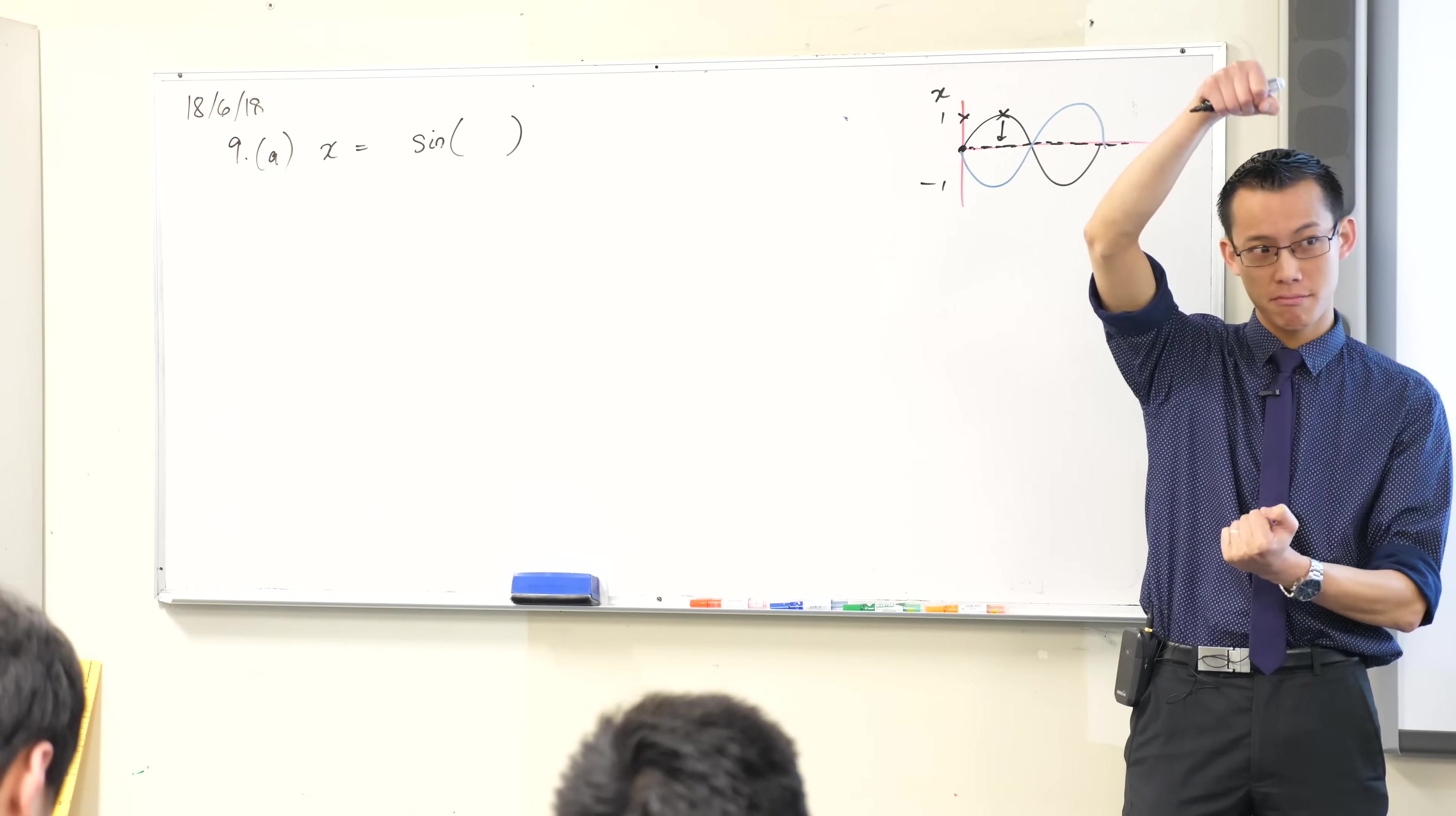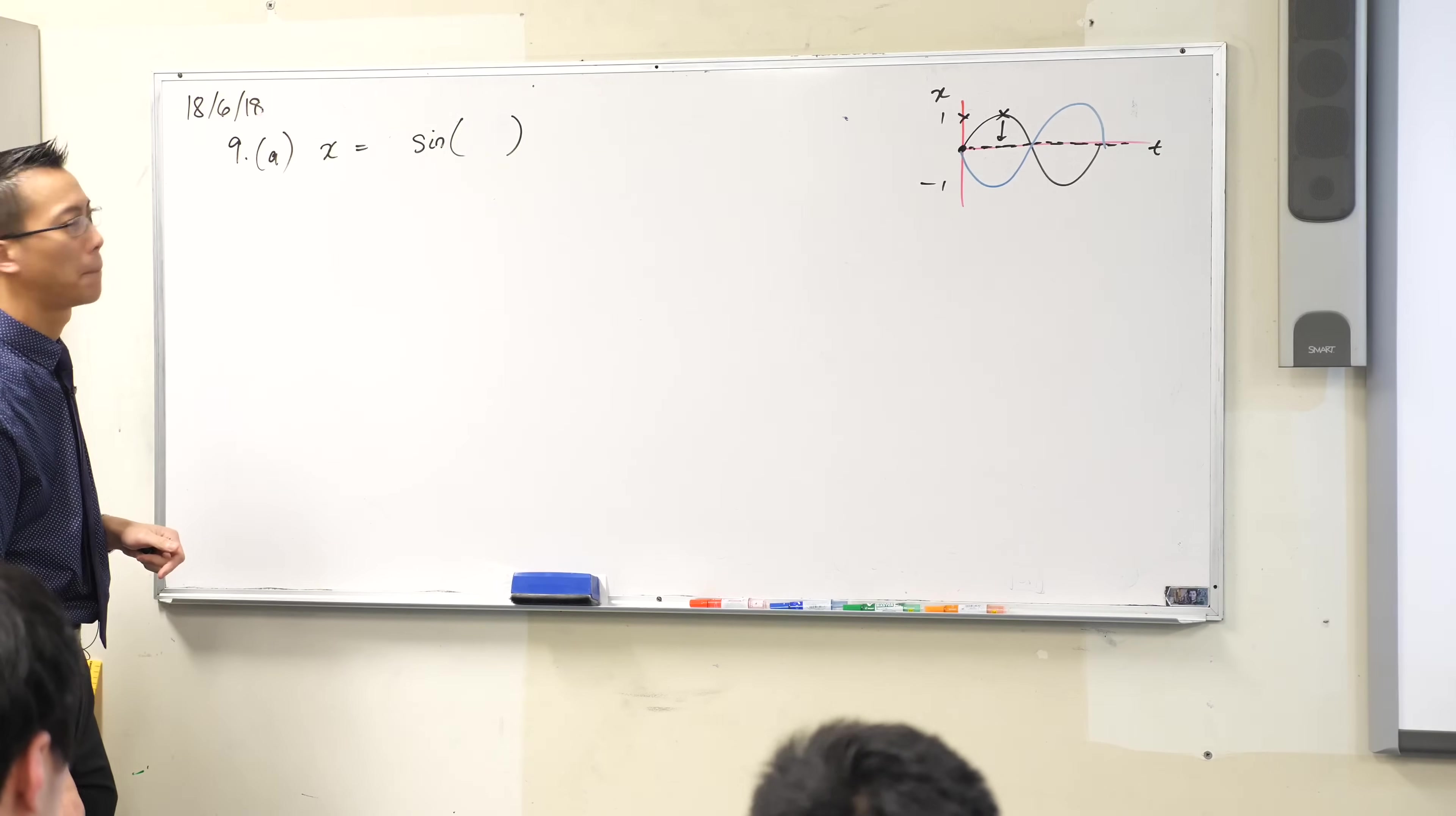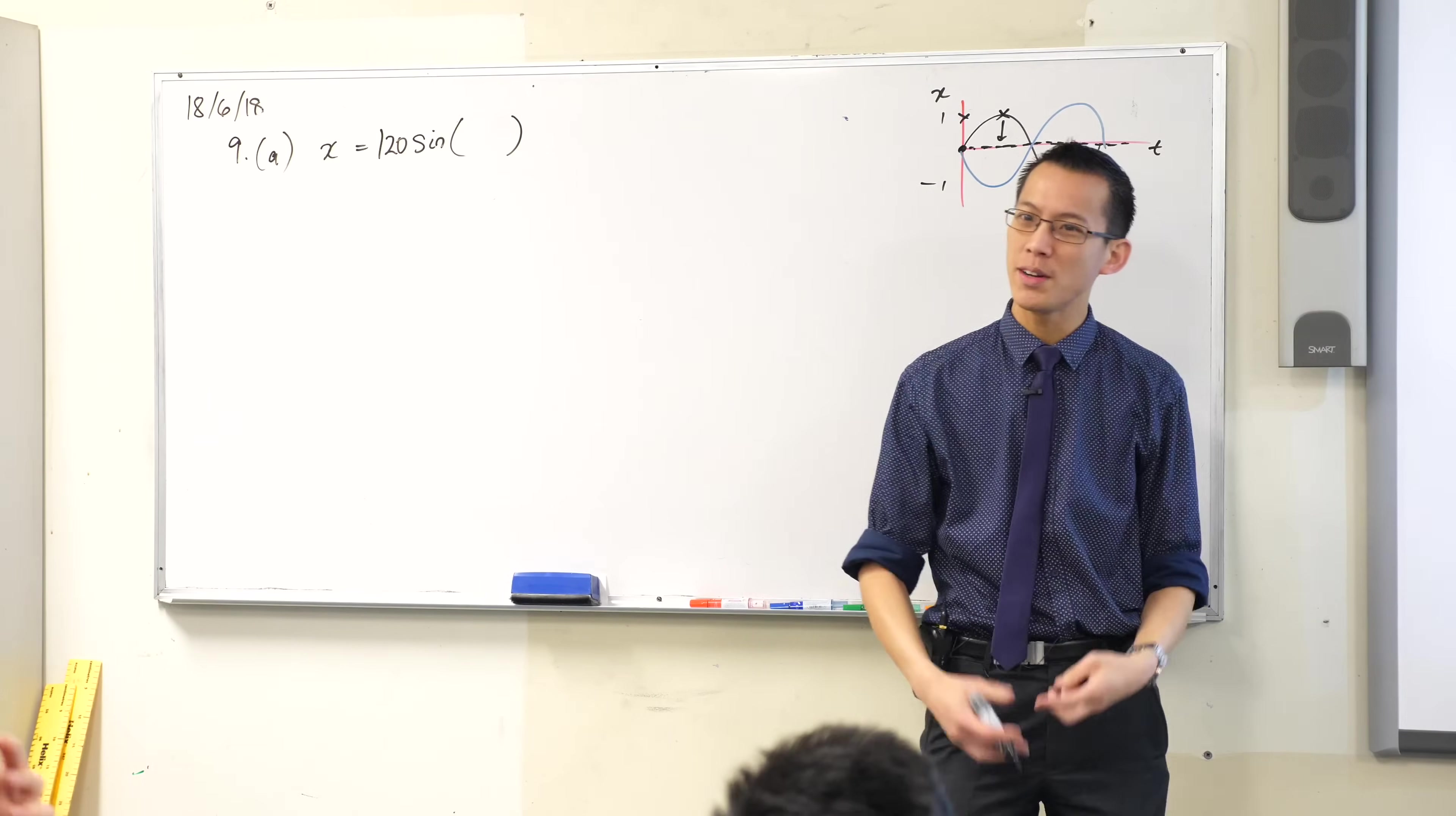What other bits are going to be important? What defines how far it goes up and down? What number up and down this is going to be? Amplitude, right? And you can see because we use that word, that language, because it's in the question, the amplitude is 120 meters. So where does that number go? The amplitude. Yeah, it's going to be this coefficient out the front here, so I'm going to slap 120 there.